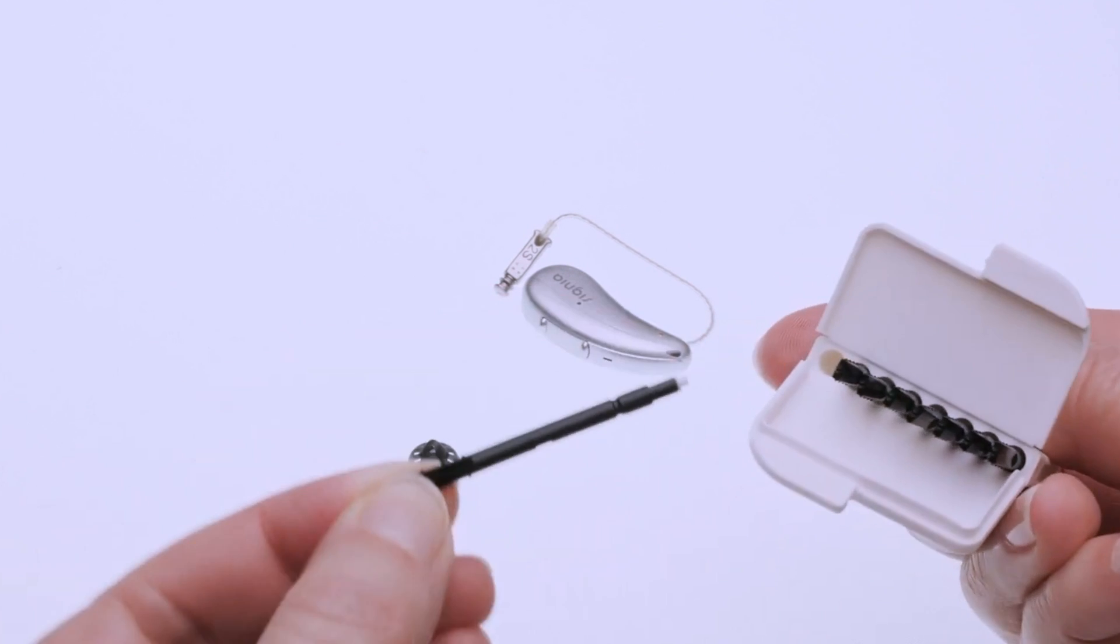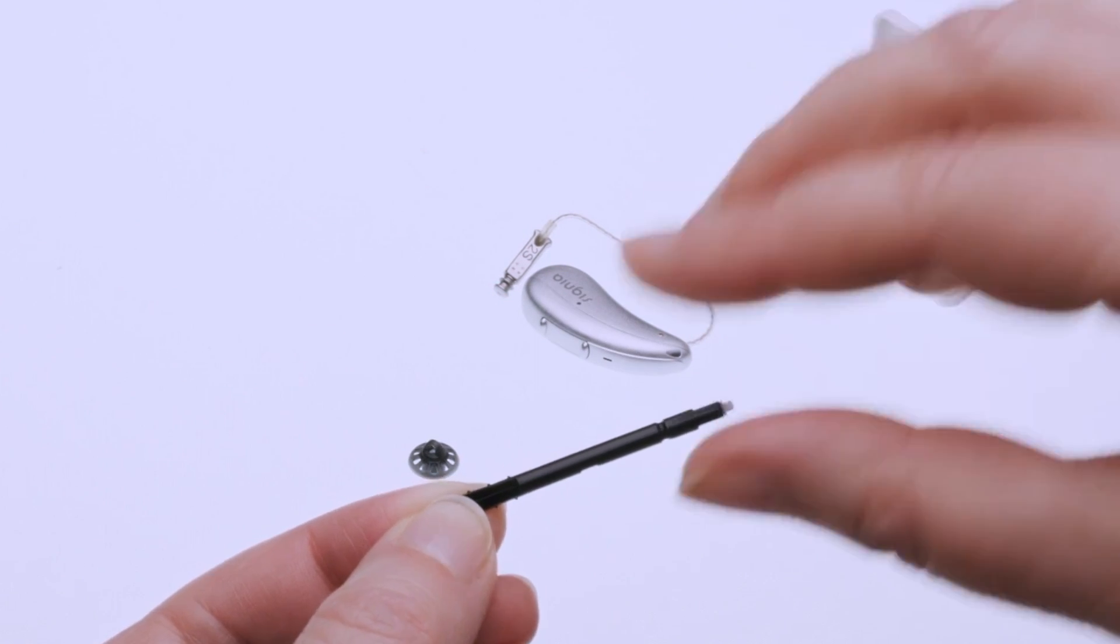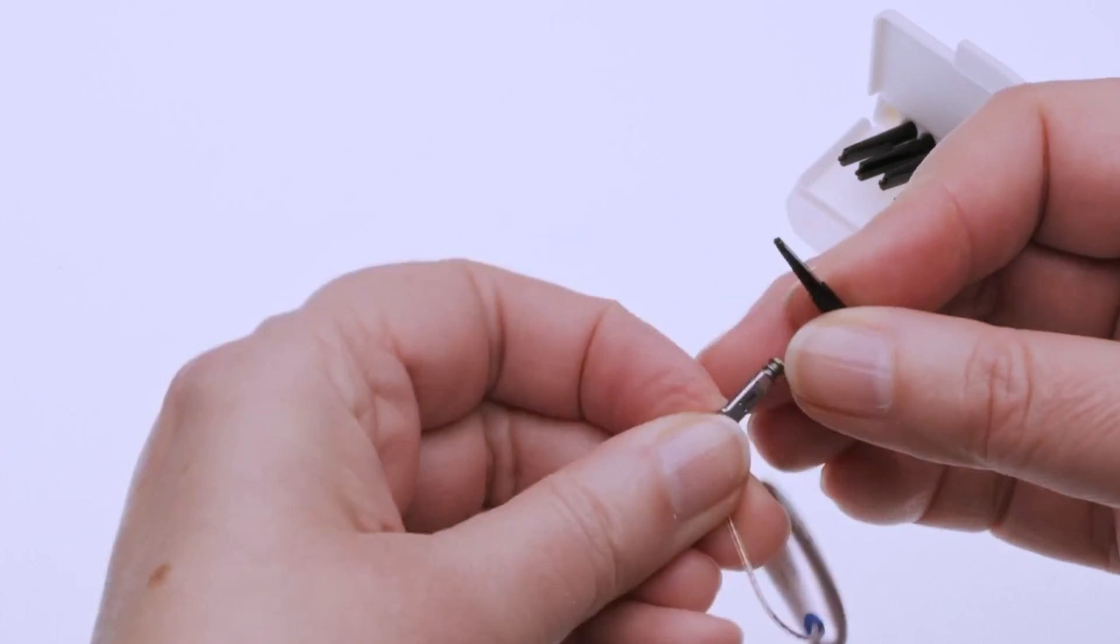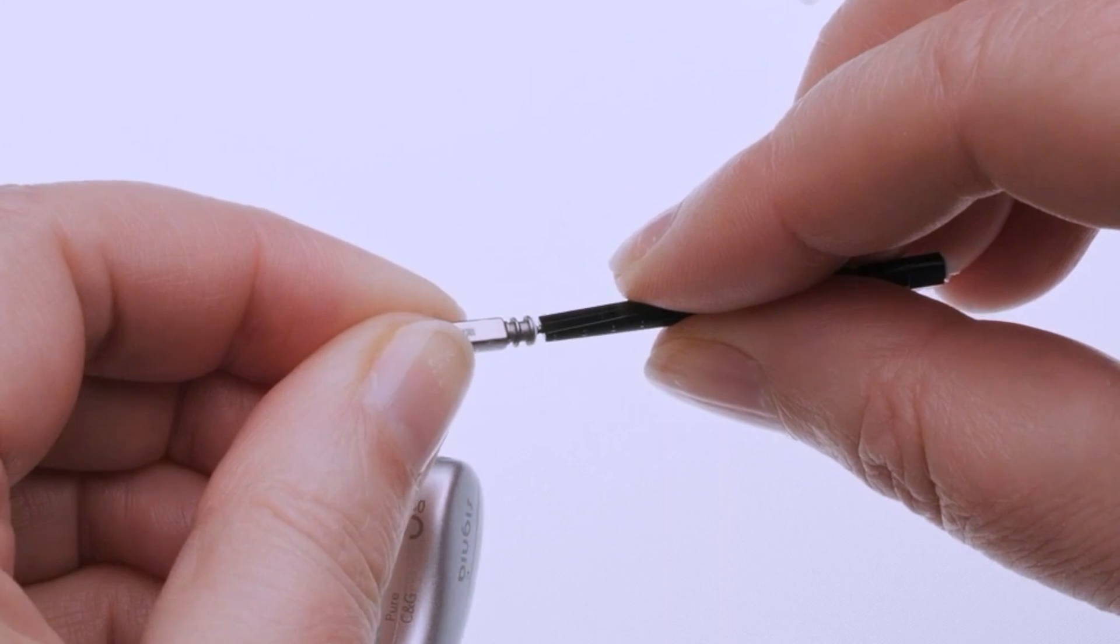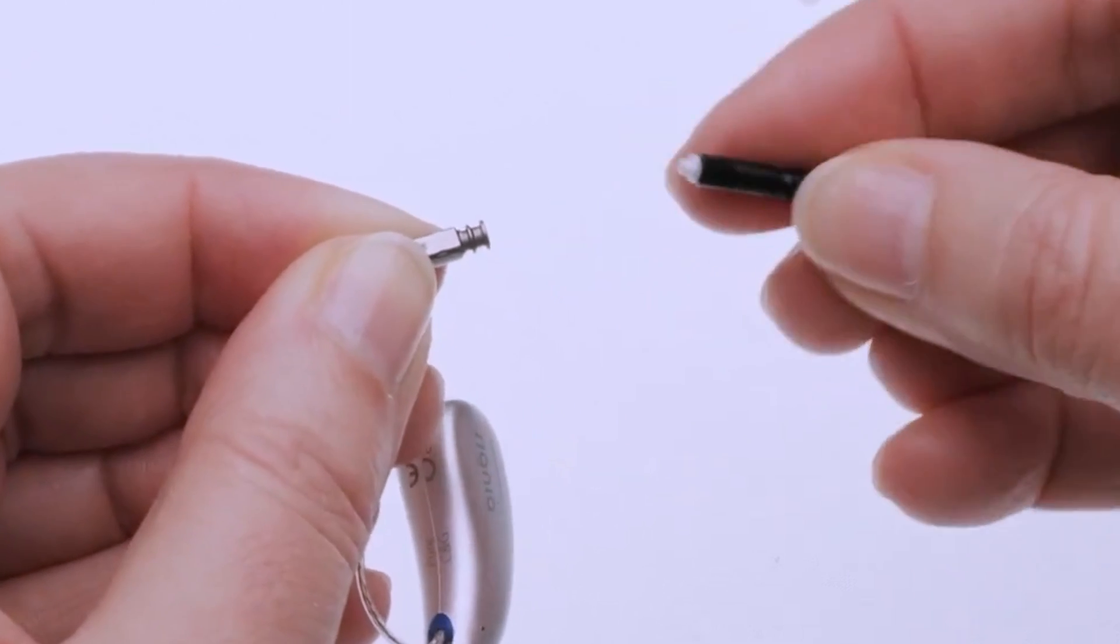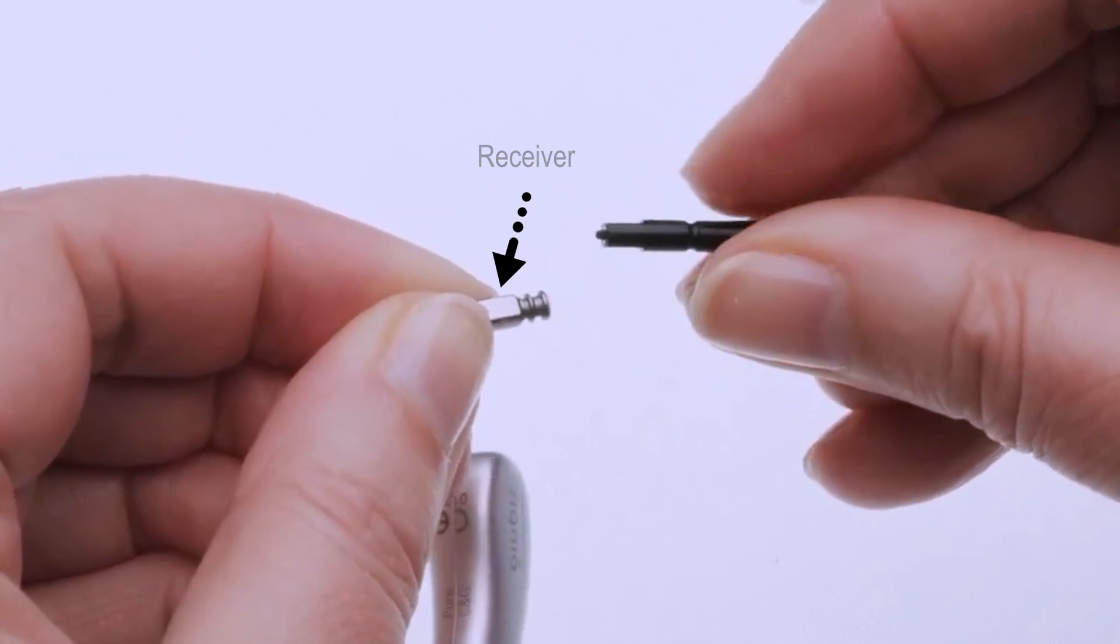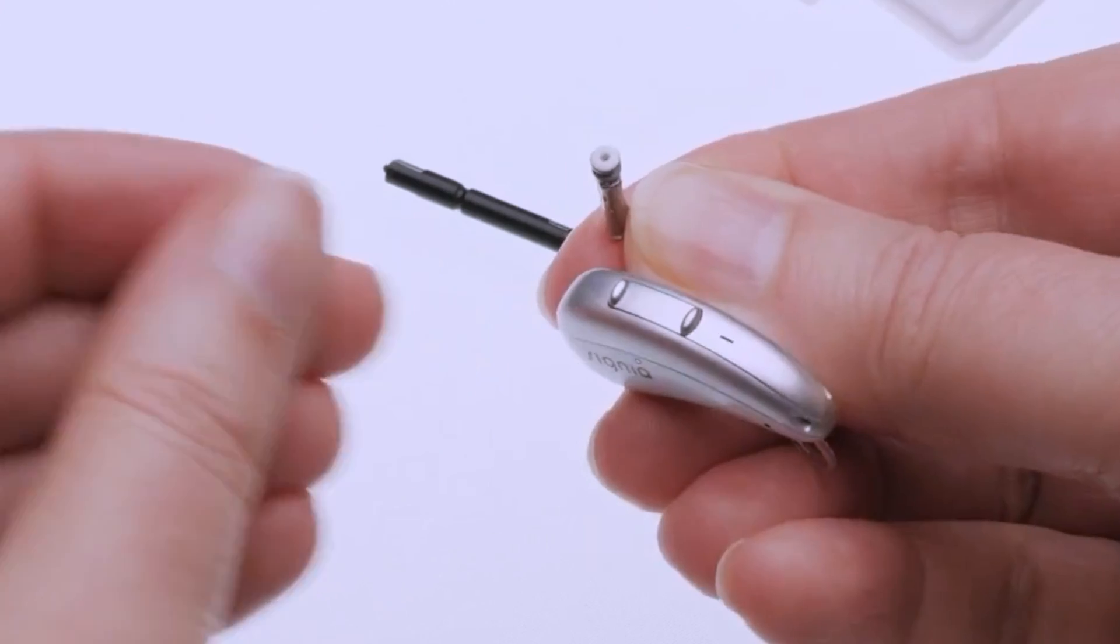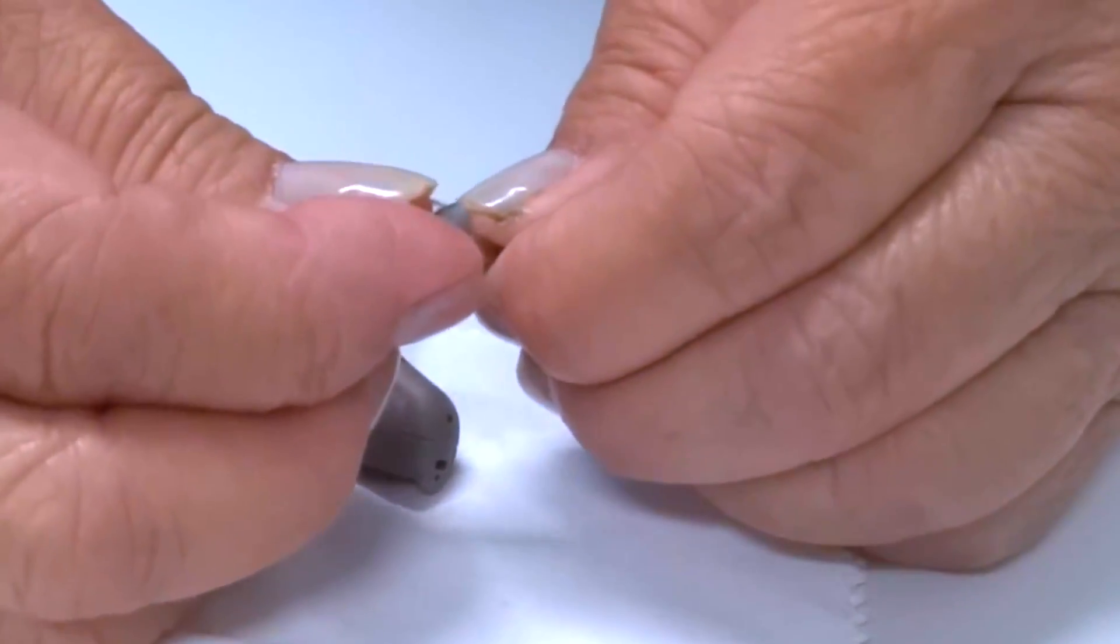Here is another demonstration of replacing the wax guard on a different hearing aid. After replacing the wax guard, gently press the hearing aid dome back over the receiver.